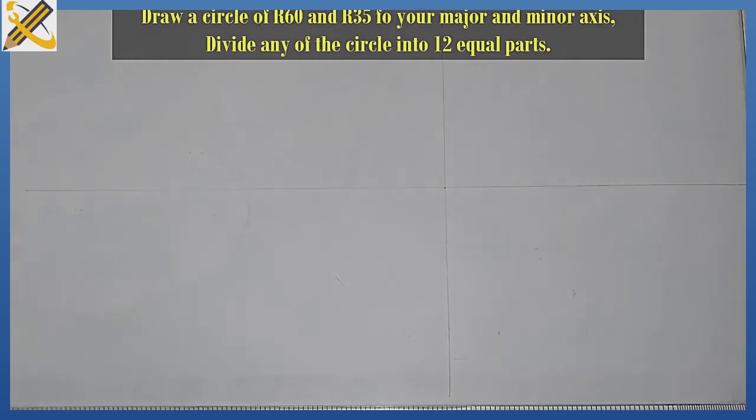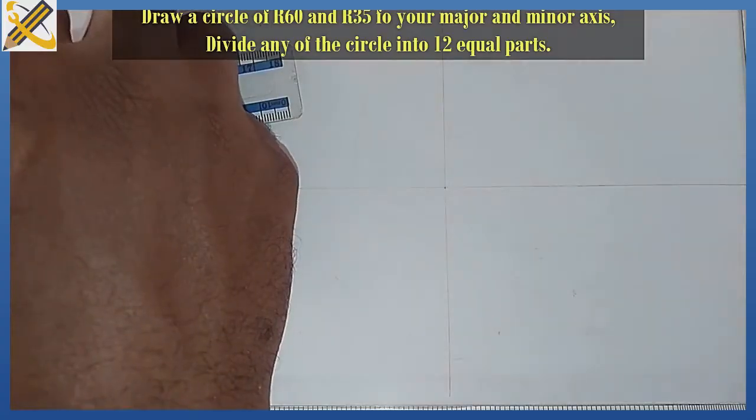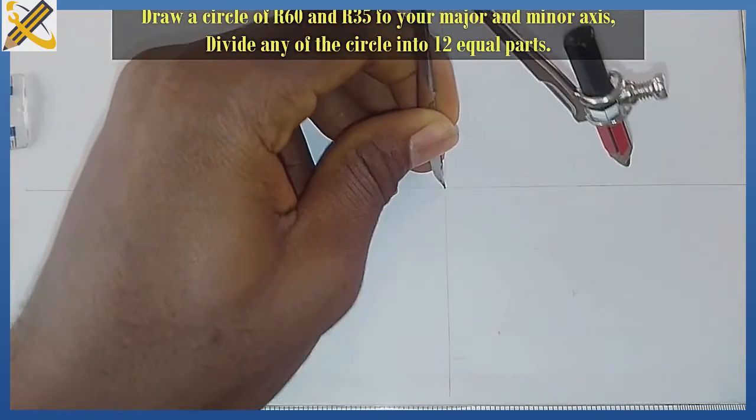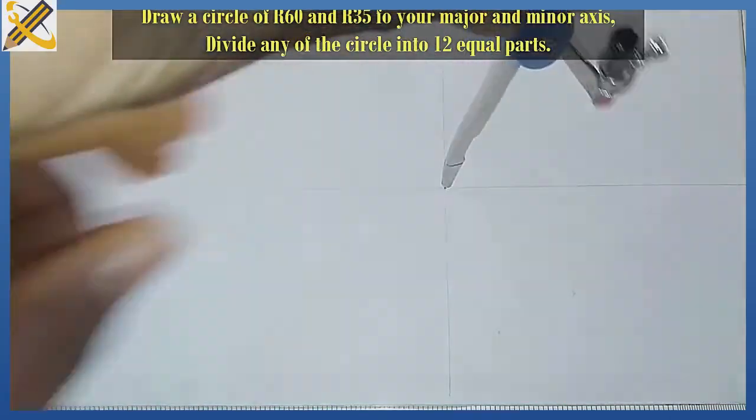If my major axis is 120mm, I'm going to pick the radius of 60. Picking radius 60, I'm going to draw the major axis.